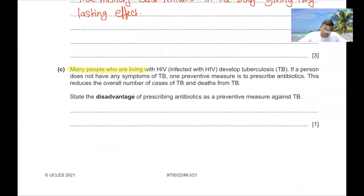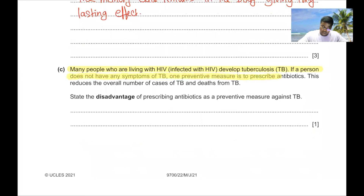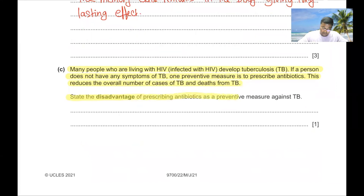Part C. Many people living with HIV develop tuberculosis. If a person has no symptoms of TB, one preventative measure is to prescribe antibiotics, which reduces cases and deaths from TB. One disadvantage of prescribing antibiotics as a preventative measure is that antibiotic-resistant bacterial strains may develop due to high usage of antibiotics.